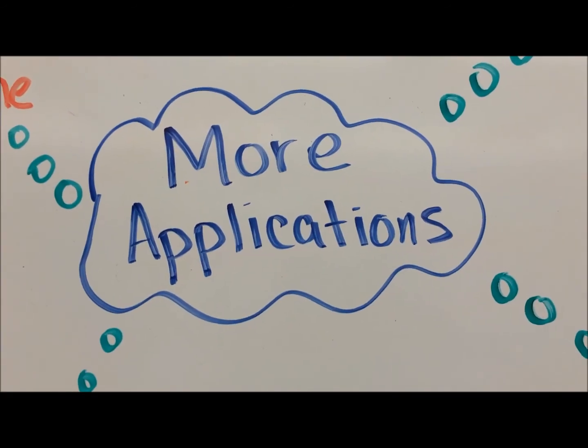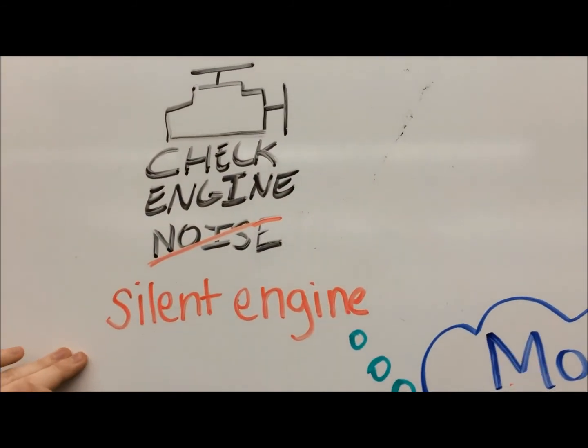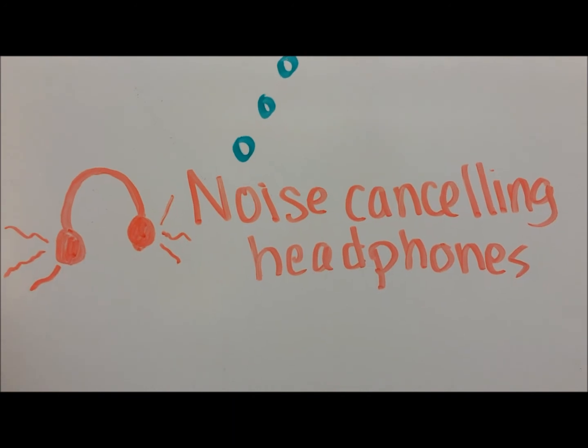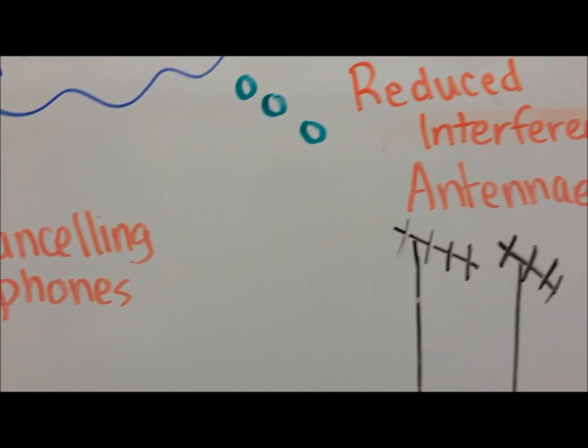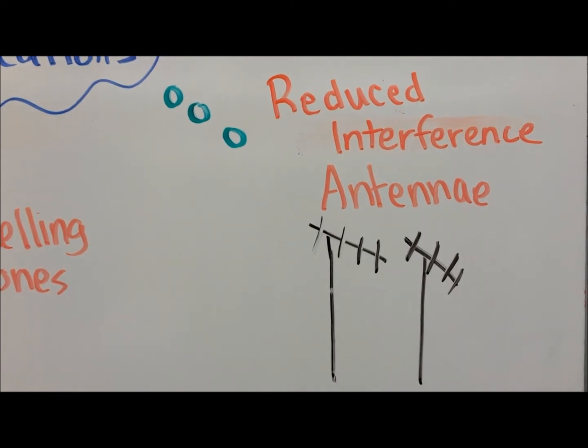More possible applications of metamaterials could be using their properties to absorb sound waves, which would give us both silent engines and noise-canceling headphones. Metamaterials could also be used to coat antennae, which would reduce the radio interference between multiple antennae.